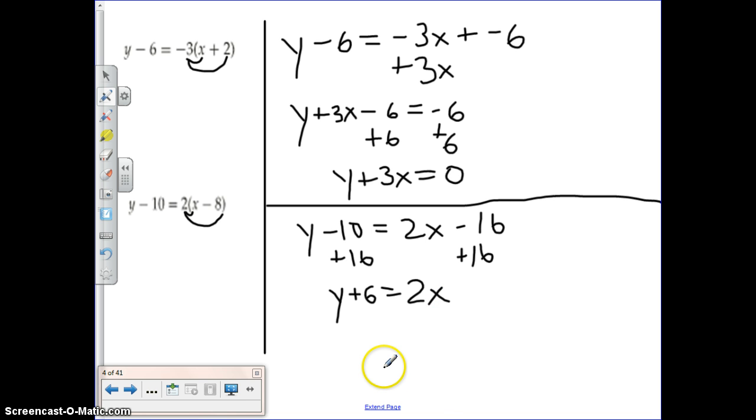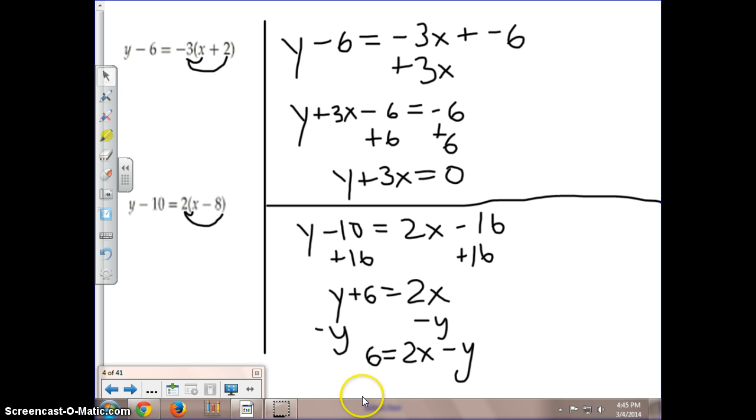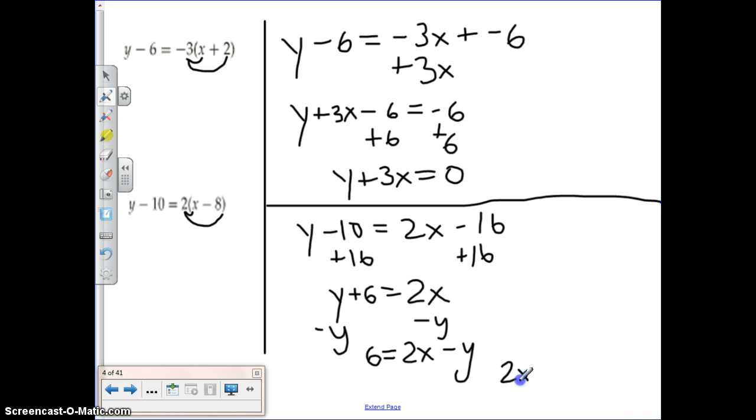So now I just need to get my y over next to my 2x, so I can just subtract y from both sides. And I will finally get 6 is equal to 2x minus y. Or if you want it to look more like our equation from before, the Ax plus By equals C, we can rewrite it as 2x minus y is equal to 6.